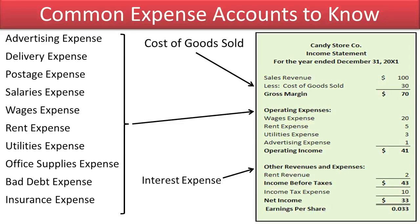Revenues and expenses that are not closely tied to selling goods and services to customers or supporting the related operations are called other revenues and expenses. Examples of other revenues would be rent revenue and interest revenue. Examples of other expenses would be interest expense. Later, we will learn about gains and losses on the sale of long-term assets, which will also be classified in the other category. After adding other revenues and deducting other expenses, we arrive at income before taxes. Income taxes are then deducted to arrive at net income.